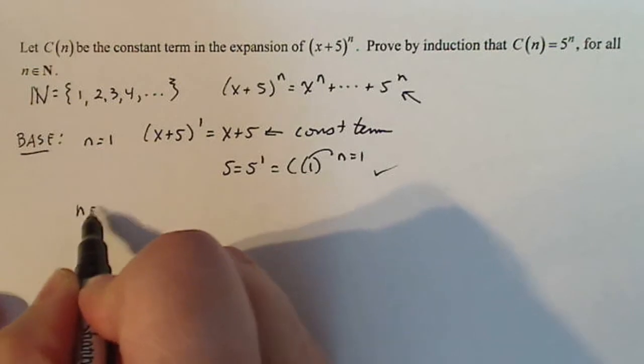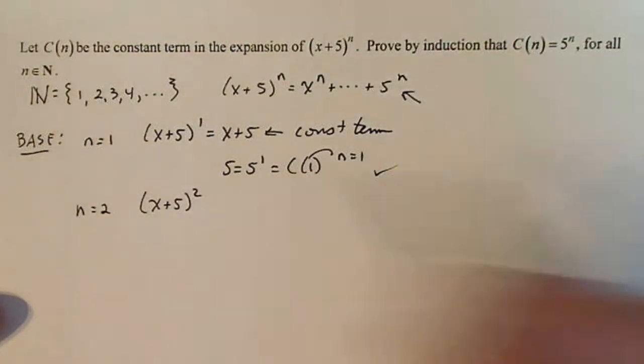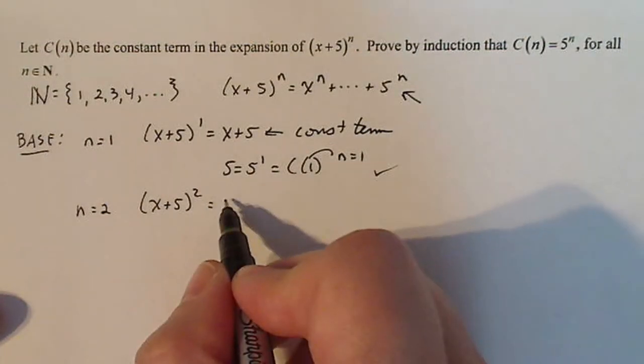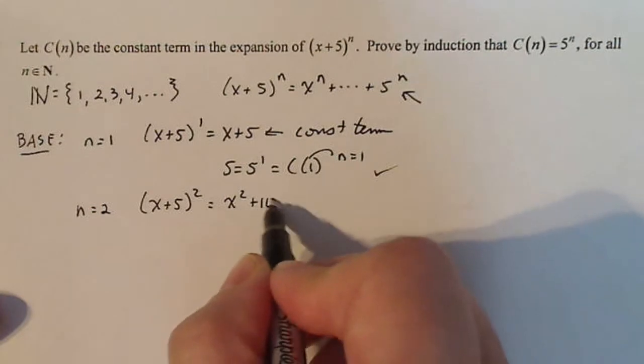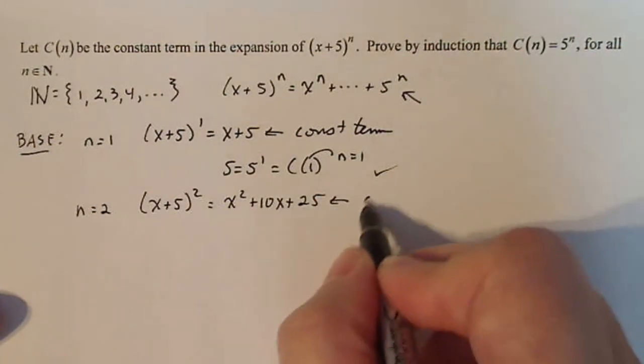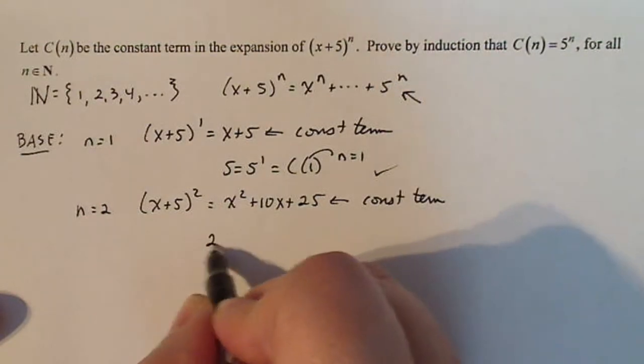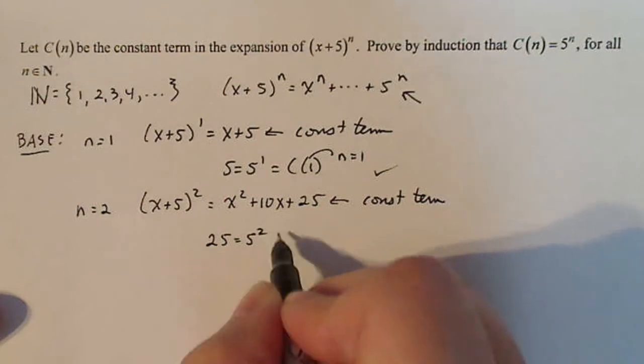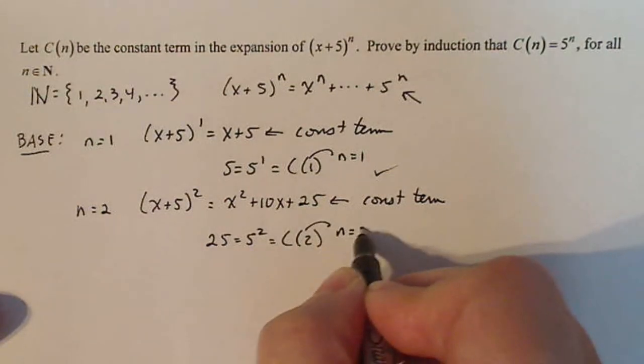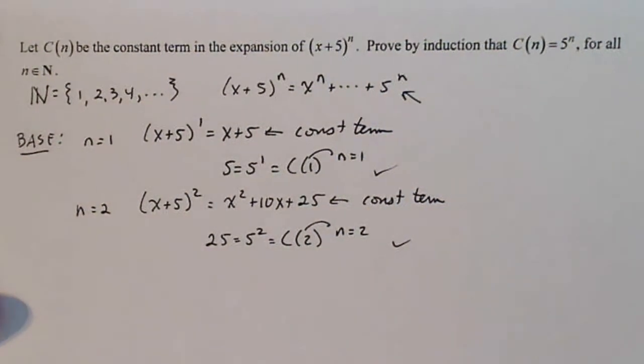So let's do n=2 just to confirm. Again, you don't have to show this one. You could do it on a scratch sheet of paper, but it is helpful to make sure you know what you're doing. So when I FOIL this out, I get x^2 + 10x + 25, and there's my constant term. So I'd say that 25 is 5^2, which is C(2), where n=2. So it is checked so far on both of these.